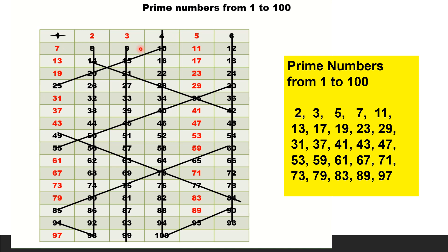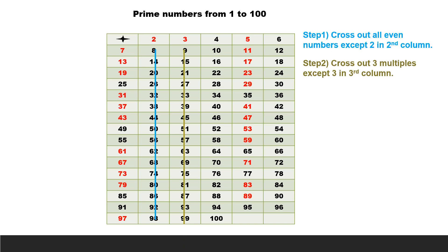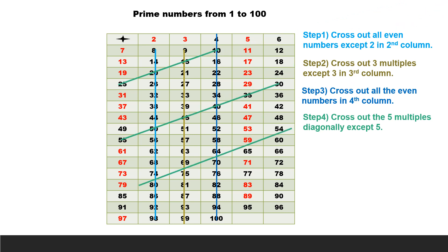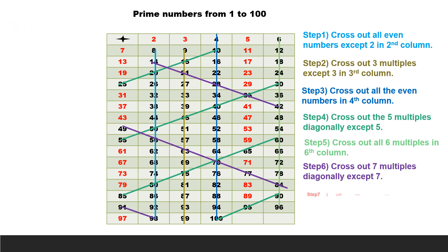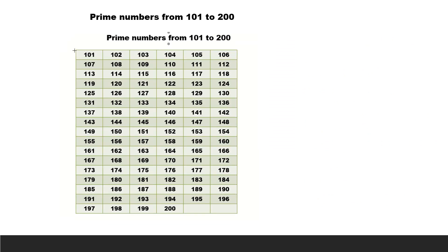2, 3, 5, 7, 11, 13, 17, 19, 23, 29, 31, 37, 41, 43, 47, 53, 59, 61, 67, 71, 73, 79, 83, 89, and 97. So in total there are 25 prime numbers from 1 to 100.